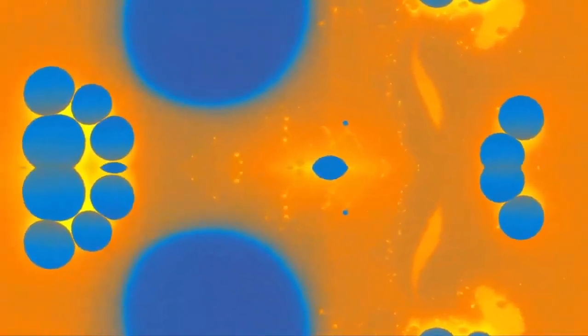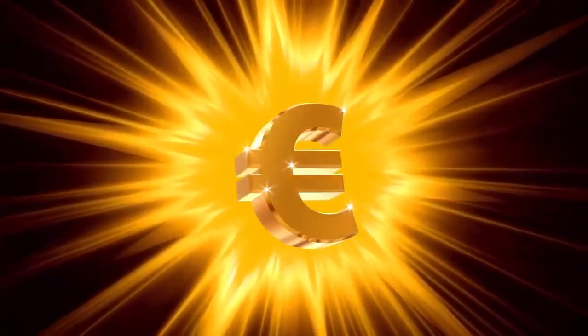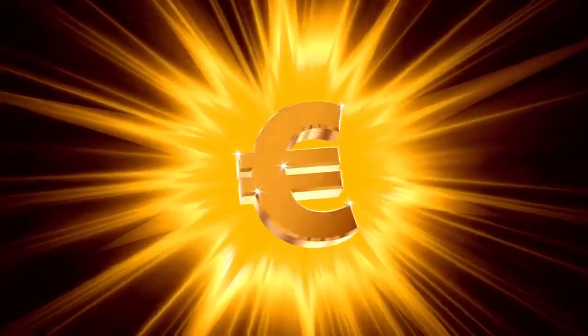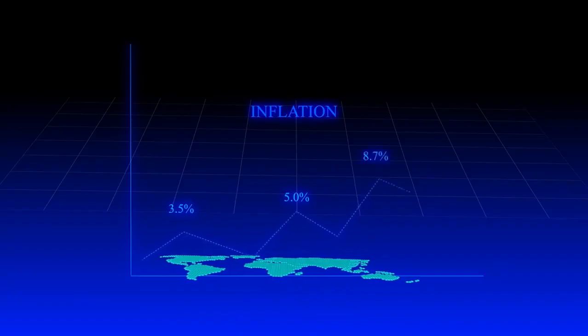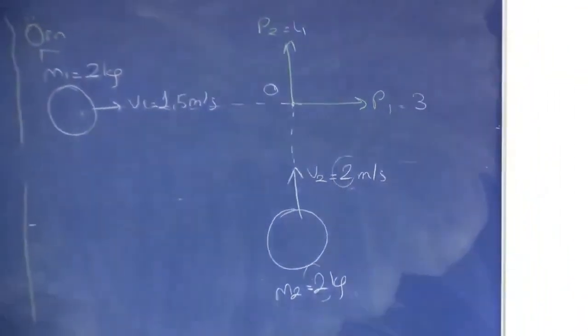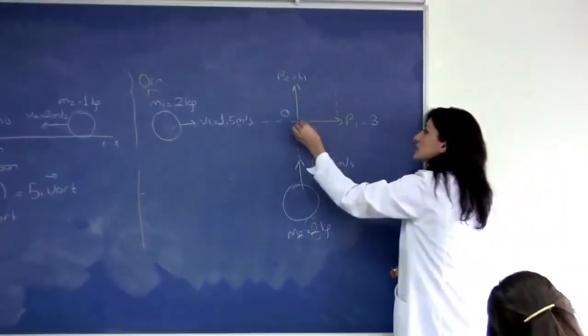Despite its appeal, eternal inflation has limitations. It's eternal only into the future, not into the past. In fact, it's been demonstrated that inflationary space-time doesn't extend into the past infinitely and must have originated from a prior non-inflationary and possibly singular state. The issue of past time-like incompleteness can't be avoided by considering alternatives like bouncing cosmologies or cyclic cosmologies, as they face similar challenges.